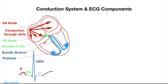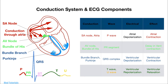This is followed by repolarization, where the heart returns to its resting polarized state. Atrial repolarization is a low-amplitude phenomenon masked by the higher-amplitude ventricular repolarization. Ventricular repolarization is represented by the T wave. A U wave, seen sometimes, represents the last phase of ventricular repolarization. During repolarization, the heart muscles relax.